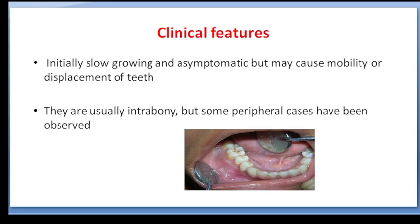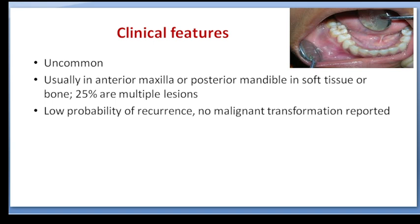It is generally asymptomatic and the growth is slow. Occasionally, mobility or displacement of teeth is seen. The tumors arise within the bone, though sometimes squamous odontogenic tumors are also seen in the gingiva or buccal mucosa. It is a rare tumor, commonly found in the anterior maxilla or posterior mandible. The prognosis is good, with low chances of recurrence, and no malignant transformation has been reported.